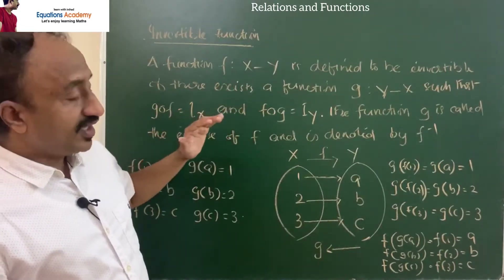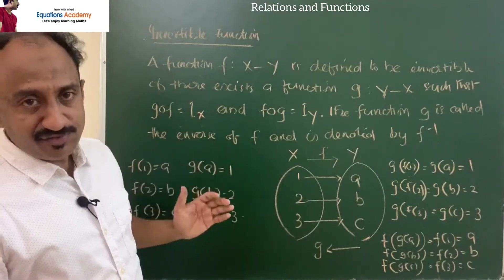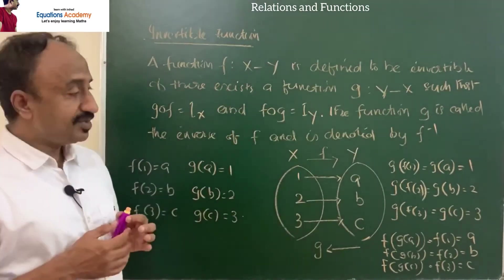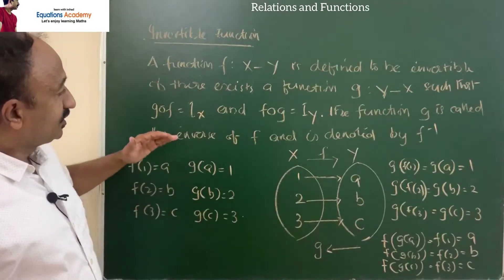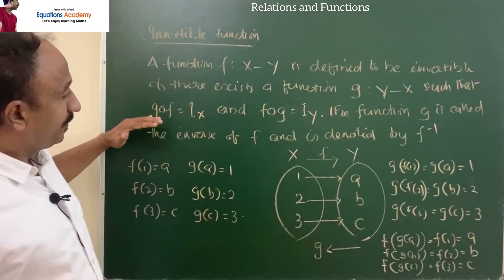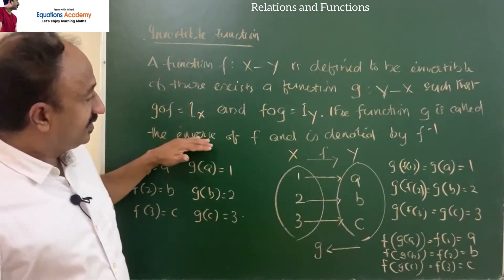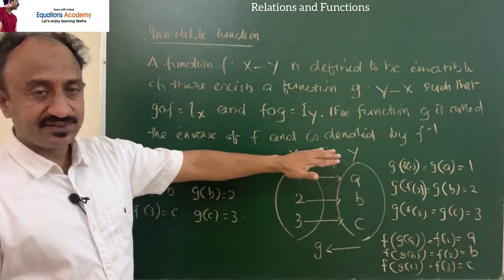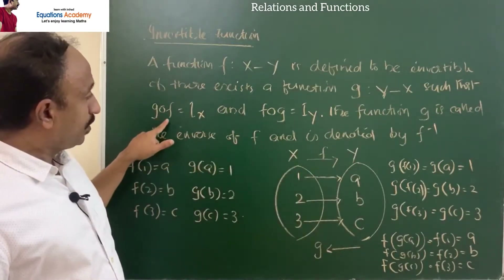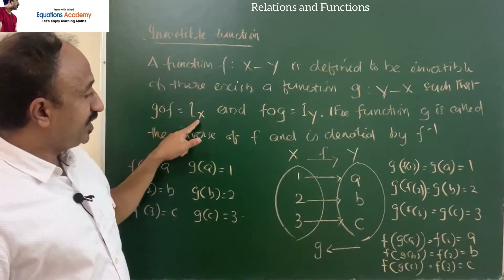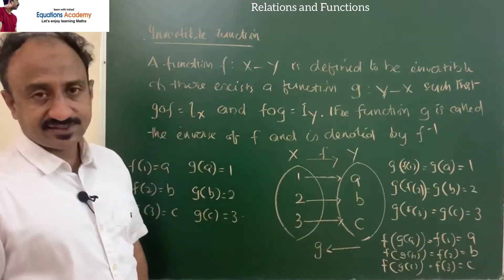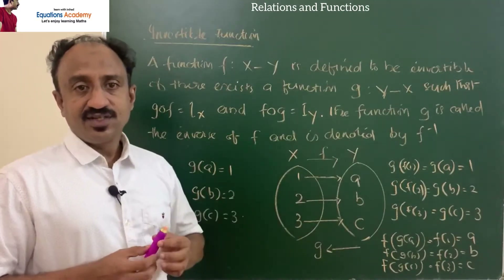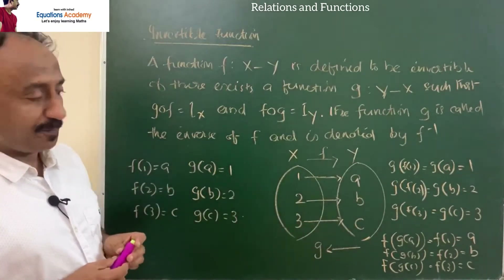For an invertible function, what is the condition? There must be an inverse g such that g∘f equals I_X. So we will find out g∘f.